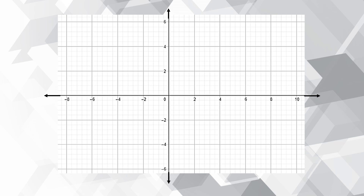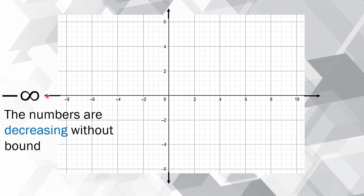This is a Cartesian coordinate plane. It is composed of two perpendicular lines. The horizontal line represents the x-axis, and the vertical real number line represents the y-axis. When you keep on moving from 0 to the left, the numbers are decreasing. If you keep on decreasing without bound, then you are referring to negative infinity — the numbers are decreasing without bound, it's never ending.